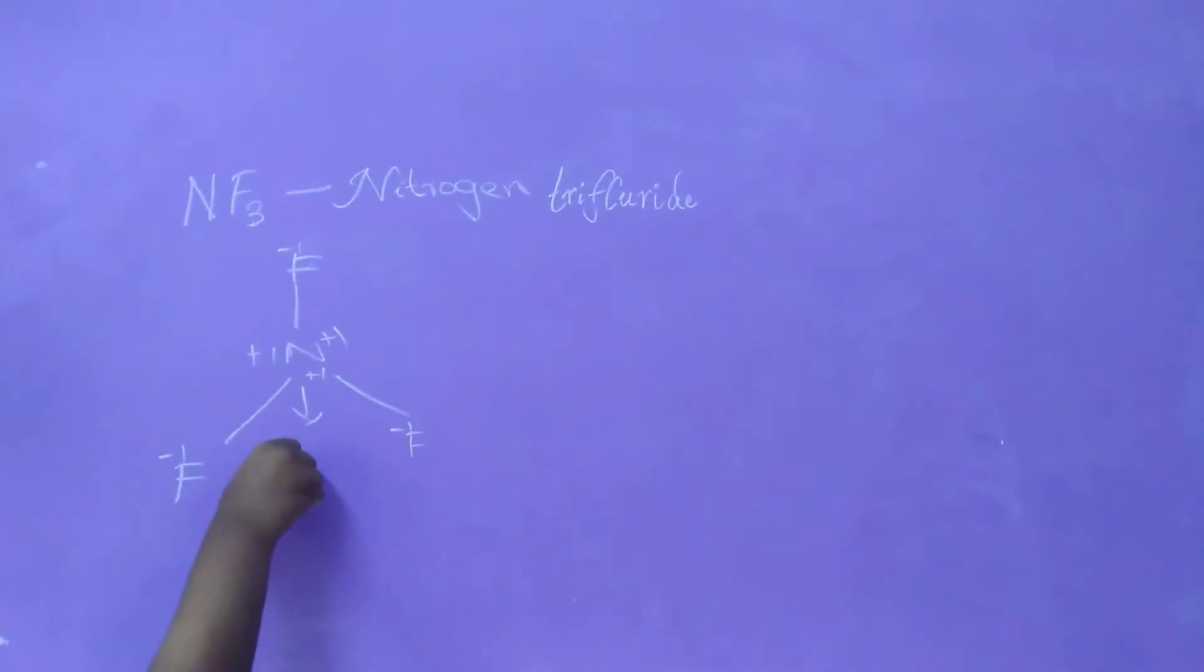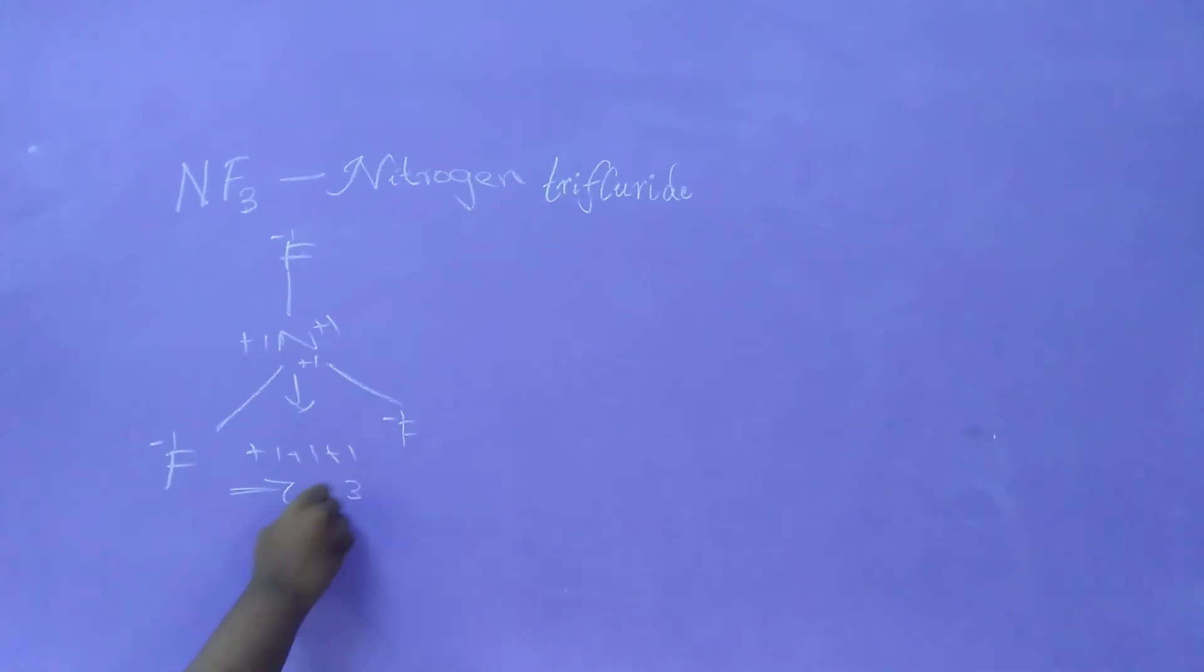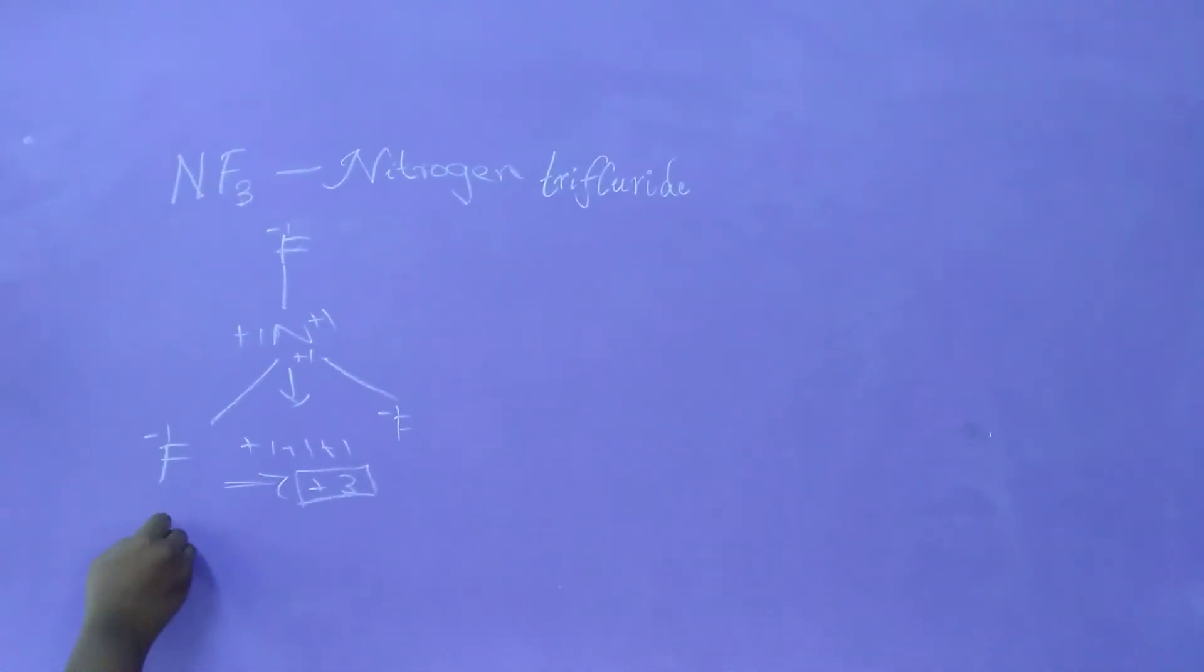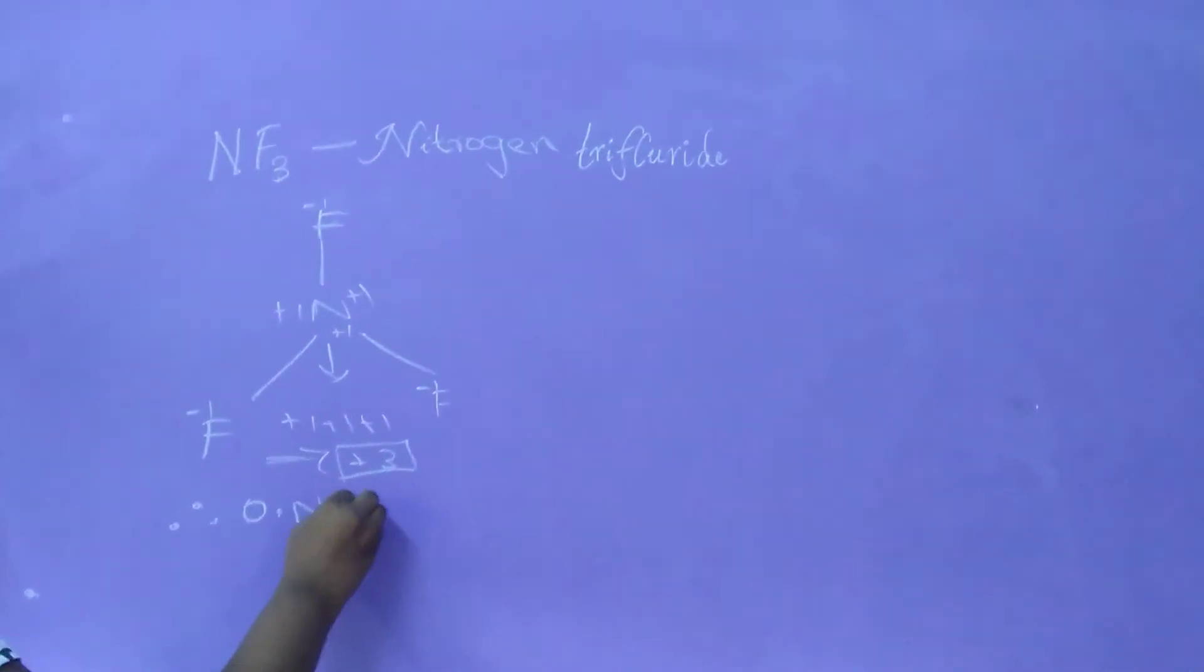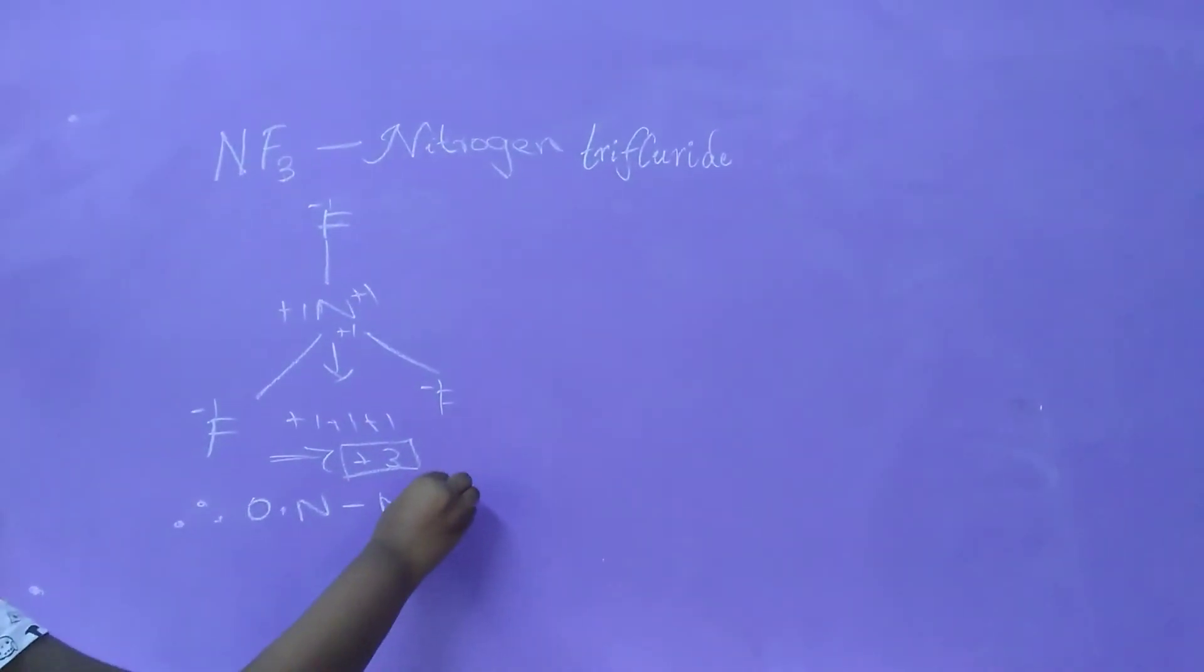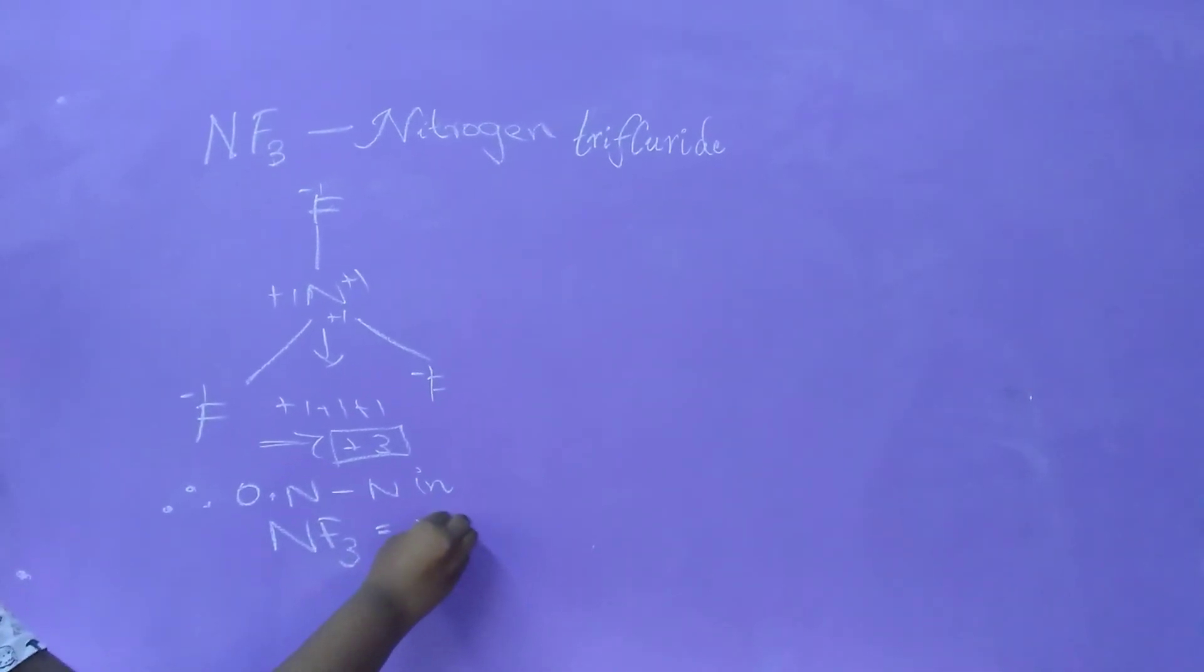So you have 3 plus 1 around 1 nitrogen. So add all together: plus 1, plus 1, plus 1. You get plus 3. So therefore, oxidation number of nitrogen in nitrogen trifluoride will be plus 3.